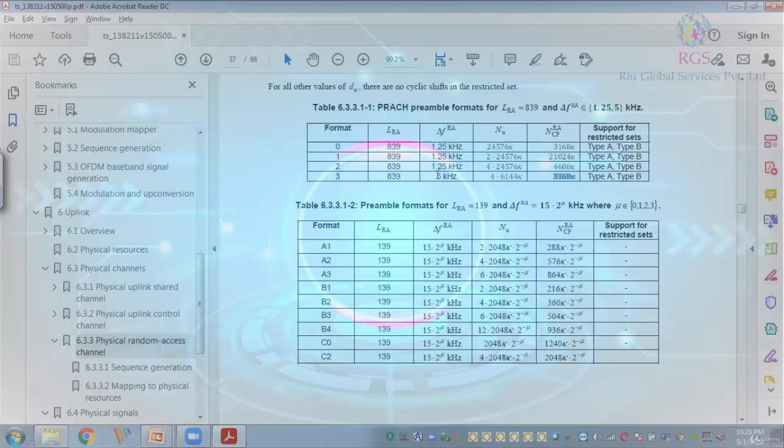And then you have the size or the sub-carrier spacing of the random access channel PRACH. Then formats A2, A3, B1, B2, B3, B4, C0, C2 - they are usually used for FR2 frequencies. In these cases their frequencies are not limited to 1.25 or just 5 kilohertz, they can go up to 15, 30, 60, and 120 kilohertz also. Here useful duration and the cyclic prefix also are different. In our study we will focus only on the long preamble formats as of now.